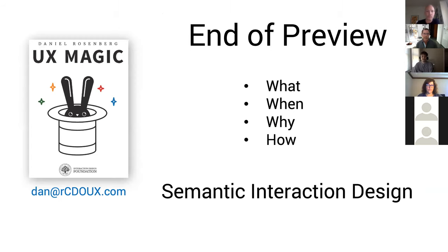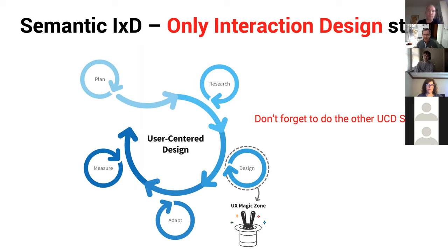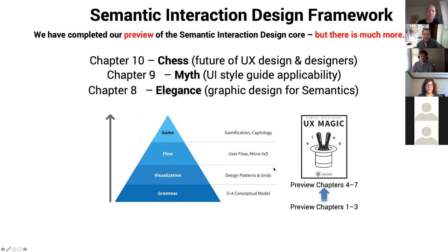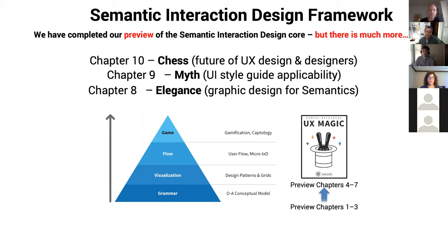And that's it — time for Q&A. I've given you the overview. Just a reminder: this book and the methodology is to become a Jedi in the design bubble. Everything else, before and after, still has to be done. There's more to the book: there's a chapter on basic graphic design — even if you do everything in the pyramid correctly, you can still screw up the communication of the conceptual model with bad graphic design. The chapter called 'Myth' is about style guides, whether to ignore them because they screw up your conceptual model, or how to write one and get the semantics in. And 'Chess' is a short rant on the future of the design profession.